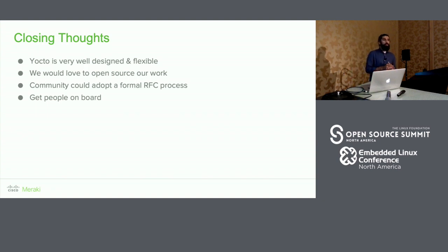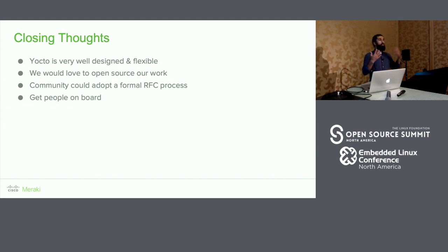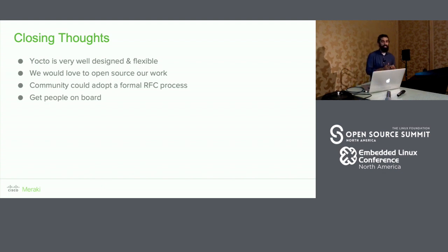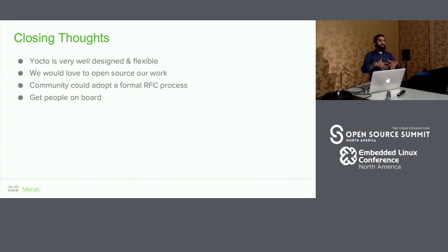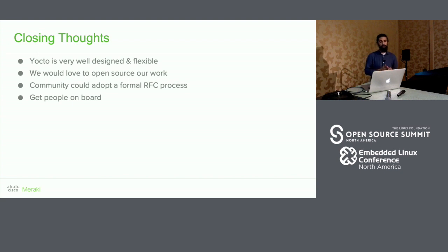I'd also like to propose a more modern RFC process, rather than using mailing lists. Something like what the Rust community uses — GitHub, GitLab, or another modern platform — would really help drive input into new features and get more participation from corporate users, open source contributors, and the broader community.